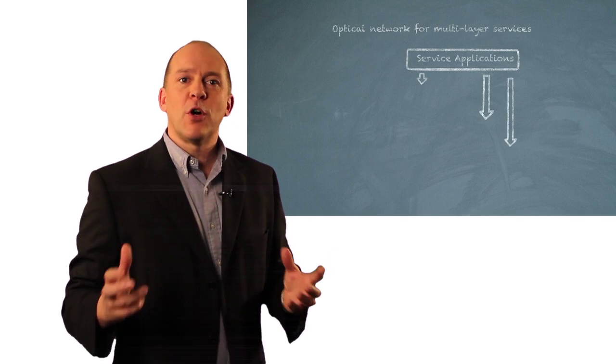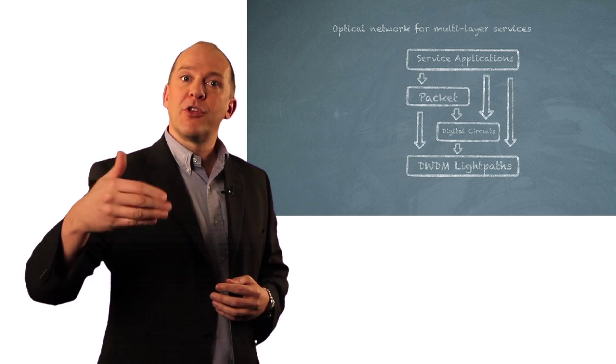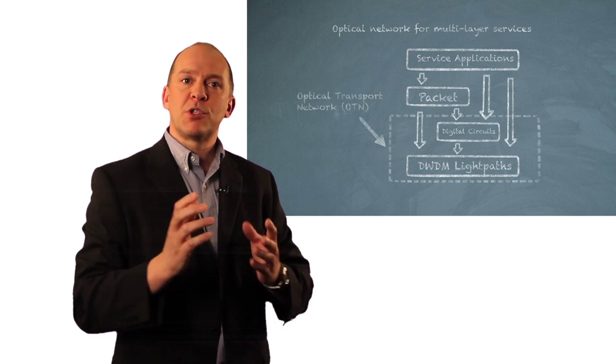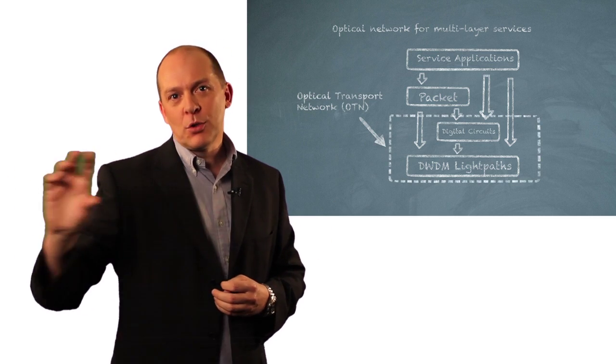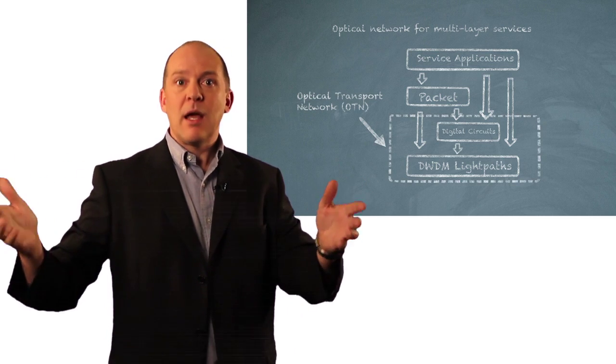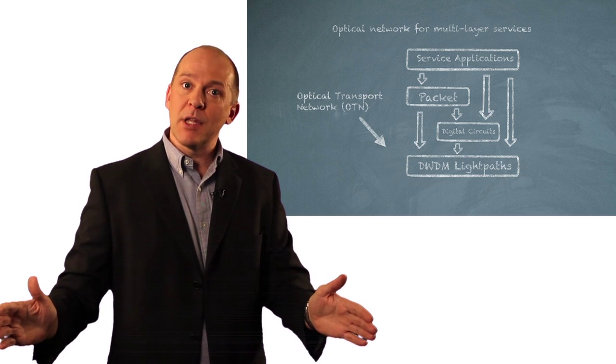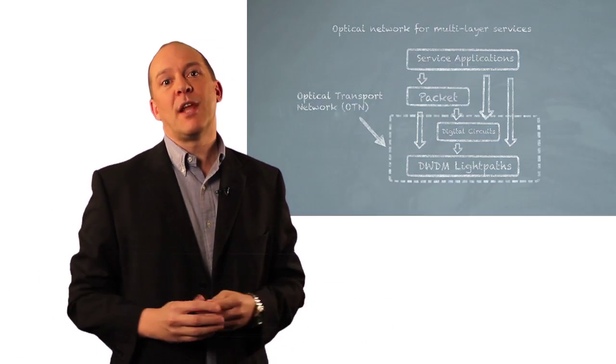OTN is fundamentally a multi-service protocol or a multi-network protocol. So the OTN component of the network actually includes both the digital piece, which would be the G.709 OTN layer, and the underlying DWDM layer that supports the wavelengths in the network.